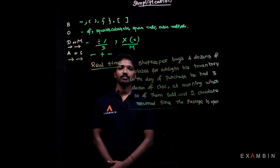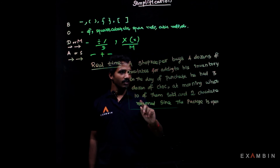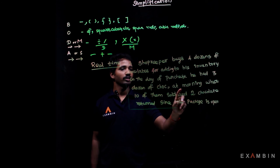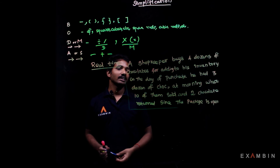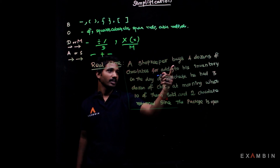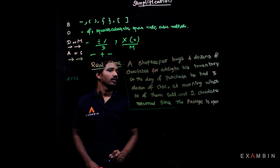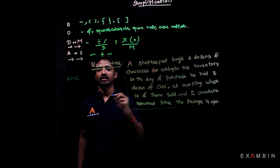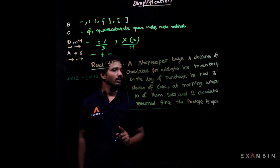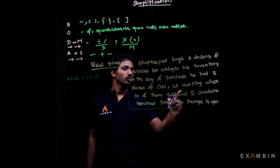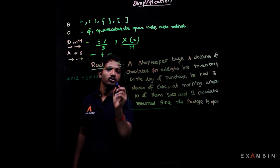Now let's look at a real-time example. A shopkeeper buys 4 dozen chocolates to add to his inventory. On the day of purchase, he had 3 dozen chocolates that morning, where 10 of them were sold and 2 chocolates were returned since the package was opened. We can write this as an equation: shopkeeper buys 4 into 12, had 3 into 12, minus 10 sold, plus 2 returned.